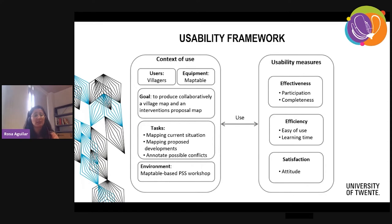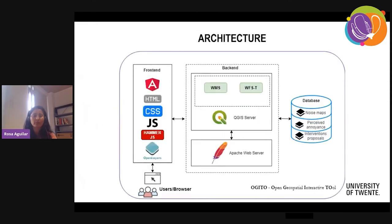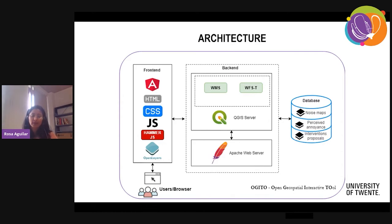Our main result is the architecture of the application, which is quite simple. We have three components. The front-end is coded in the Angular framework using HTML, CSS, JavaScript, and Hammer for supporting gesture movements. The back-end is basically QGIS Server on top of Apache web server. QGIS Server provides services for WMS and WFS transaction. For the database, we decided to use shapefiles — just plain shapefiles — because we wanted to keep complexity to a minimum so people can adopt the tool and use it by themselves without having to install a database management system.